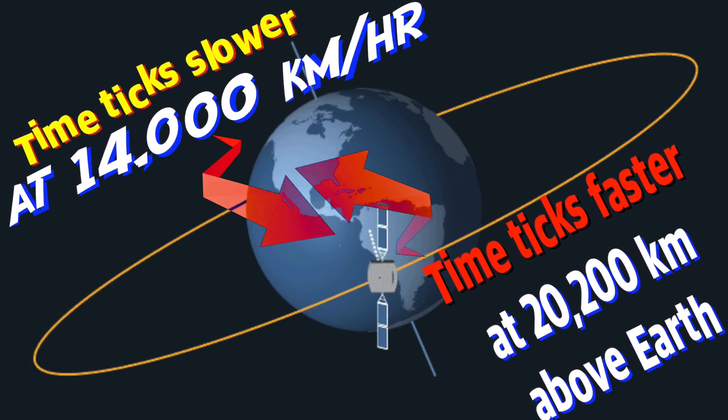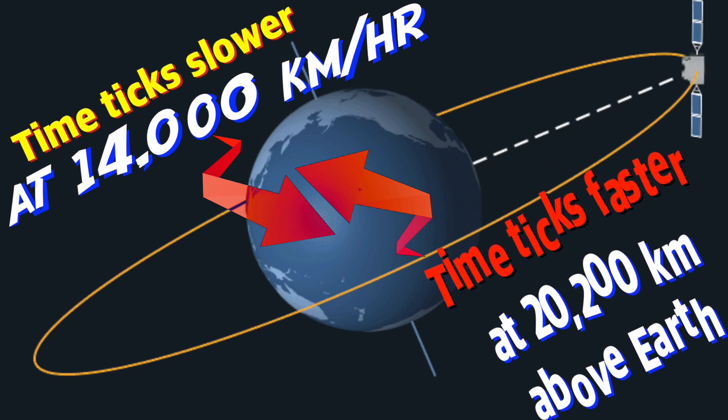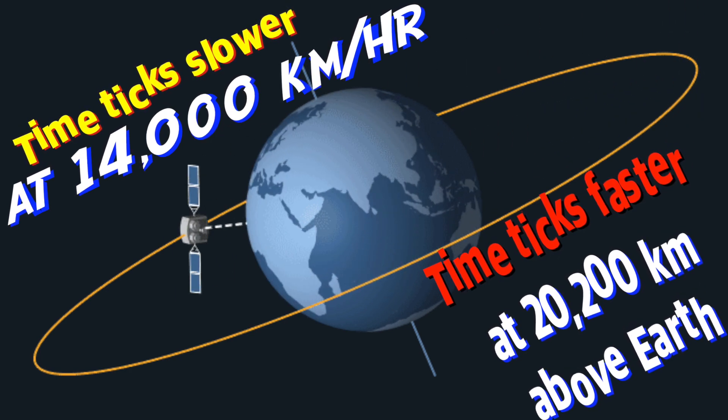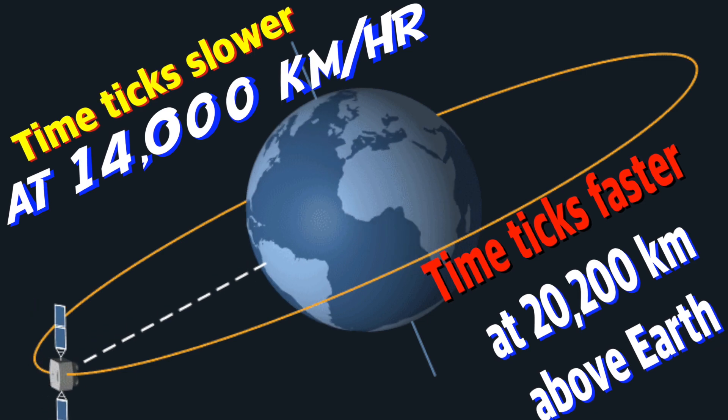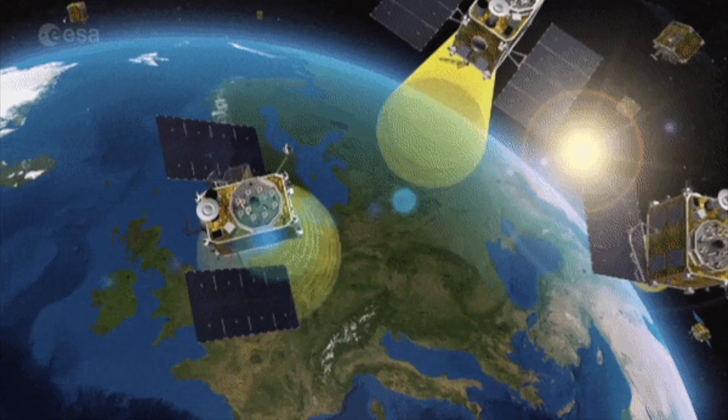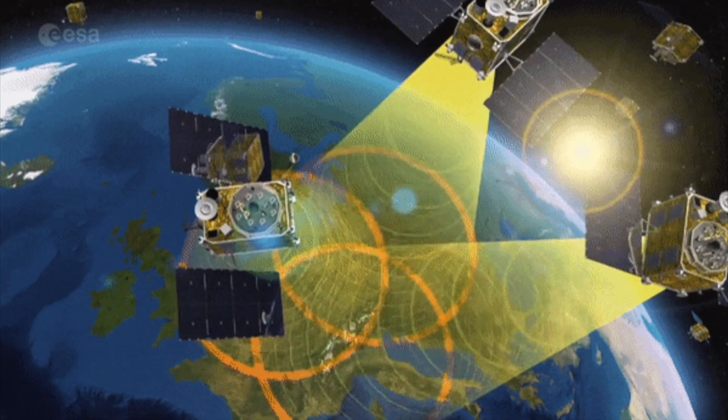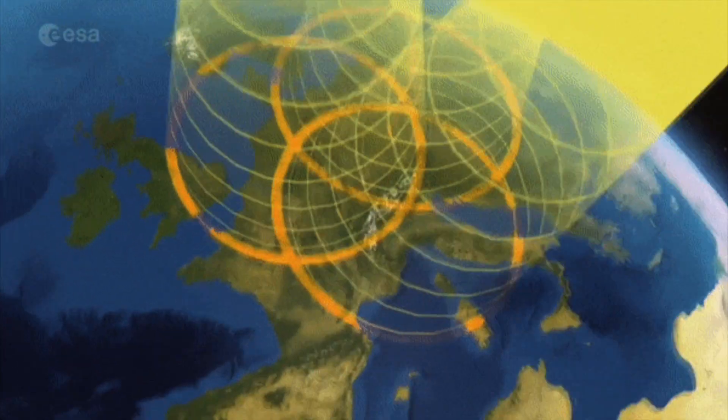So that's how the GPS satellites tick their clocks at the same time as we have the clocks ticking on Earth, and that's how you get the accurate location information from the GPS satellites above. Is that interesting?